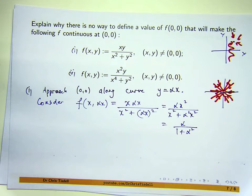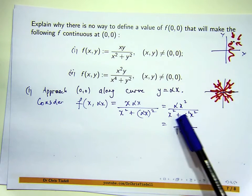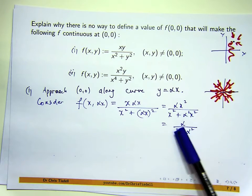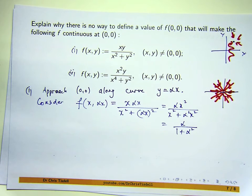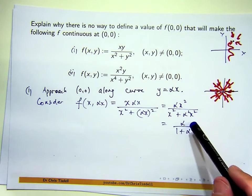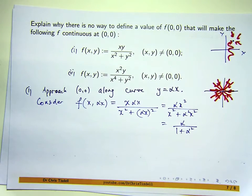We've reached a very important point in the solution. If I approach (0,0) along the line y = x (alpha = 1), this will be one-half. If I approach the origin along y = −x (alpha = −1), I'm going to get negative one-half. So along those two lines, one limit is 1/2 and the other is −1/2 — so there's no way that the limit can exist. The alpha shows that the behaviour of the function depends on the path along which we approach (0,0).